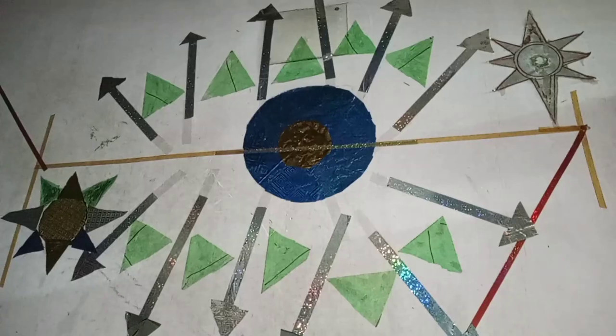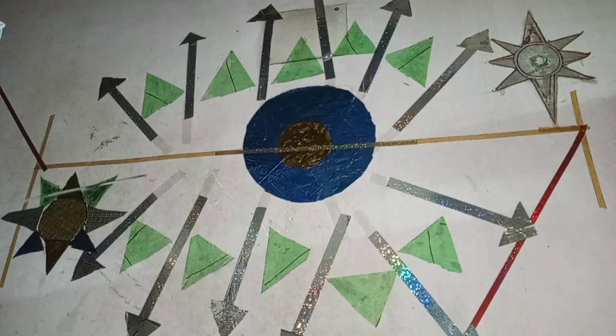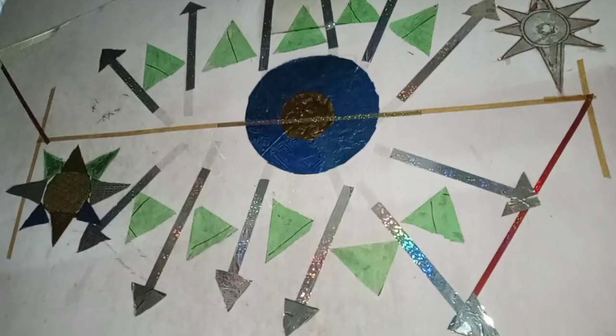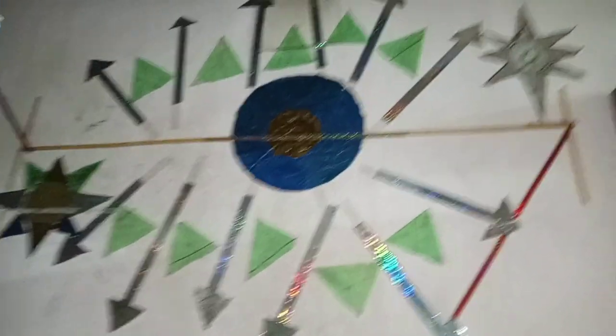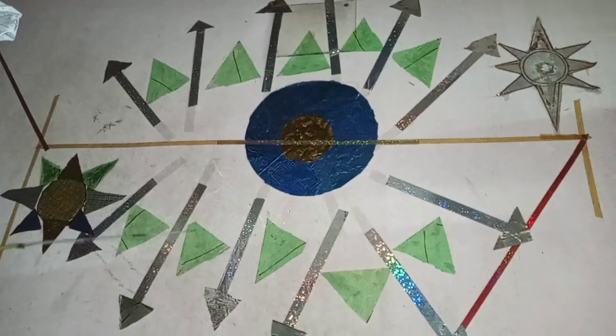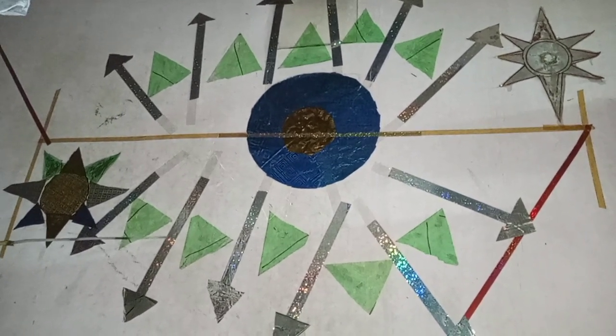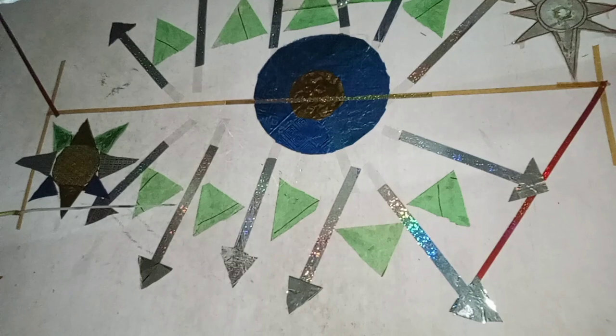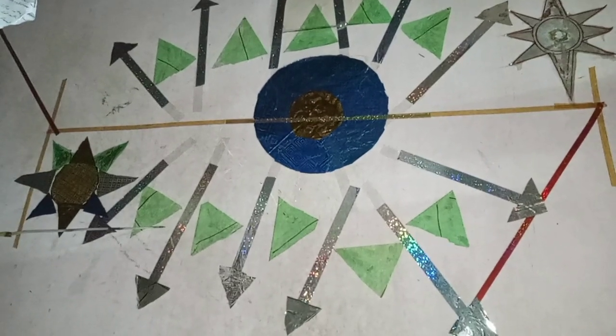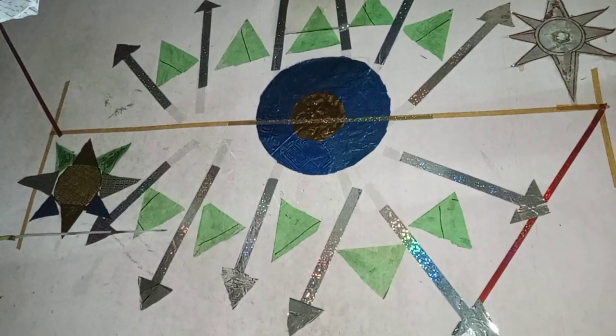Seventh is the Dragon Triangle, also known as the Devil's Sea in Japan, south of Japan, also known as Japan's Atlantis. Eighth is the Wharton Basin in the Indian Ocean with great depths and largely unexplored.